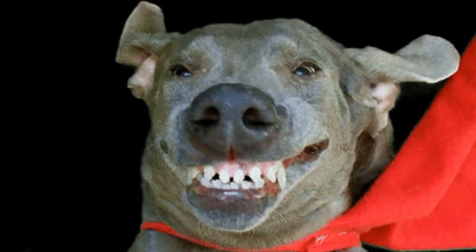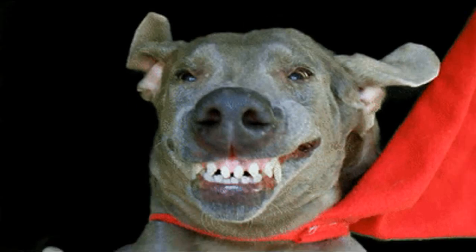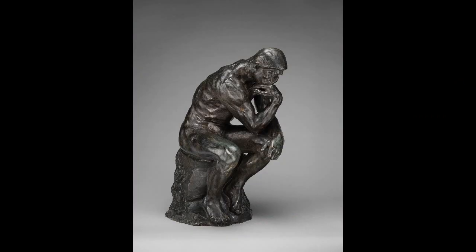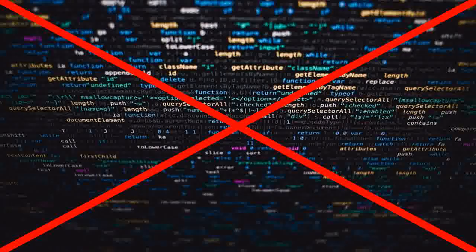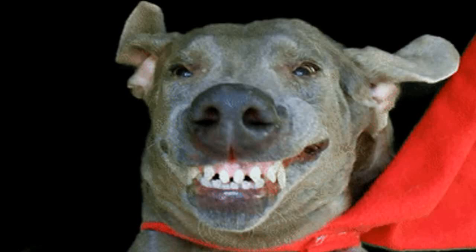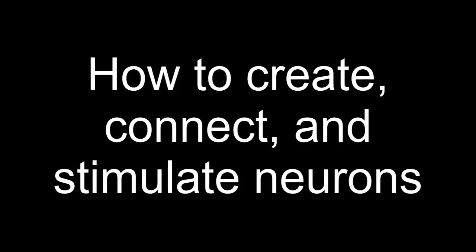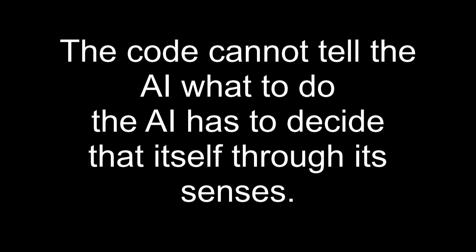Firstly, you must know what a sentient AI is. In order to be sentient, the AI needs to be able to think for itself. It cannot run on any code that directly tells it what to think. All the code can tell the AI is how to create, connect, and stimulate neurons. The code cannot tell the AI what to do — the AI has to decide that itself through its senses.